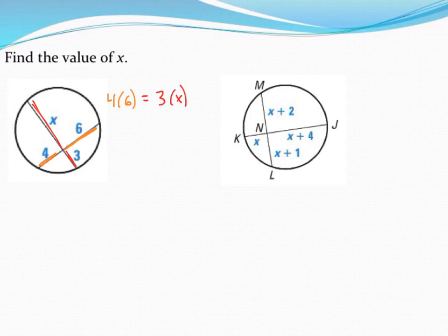The two pieces of each chord multiplied together equal each other. So, solving this very simple equation, we get 24 is equal to 3 times x. Dividing both sides by 3 tells me that x is equal to 8 in this case.